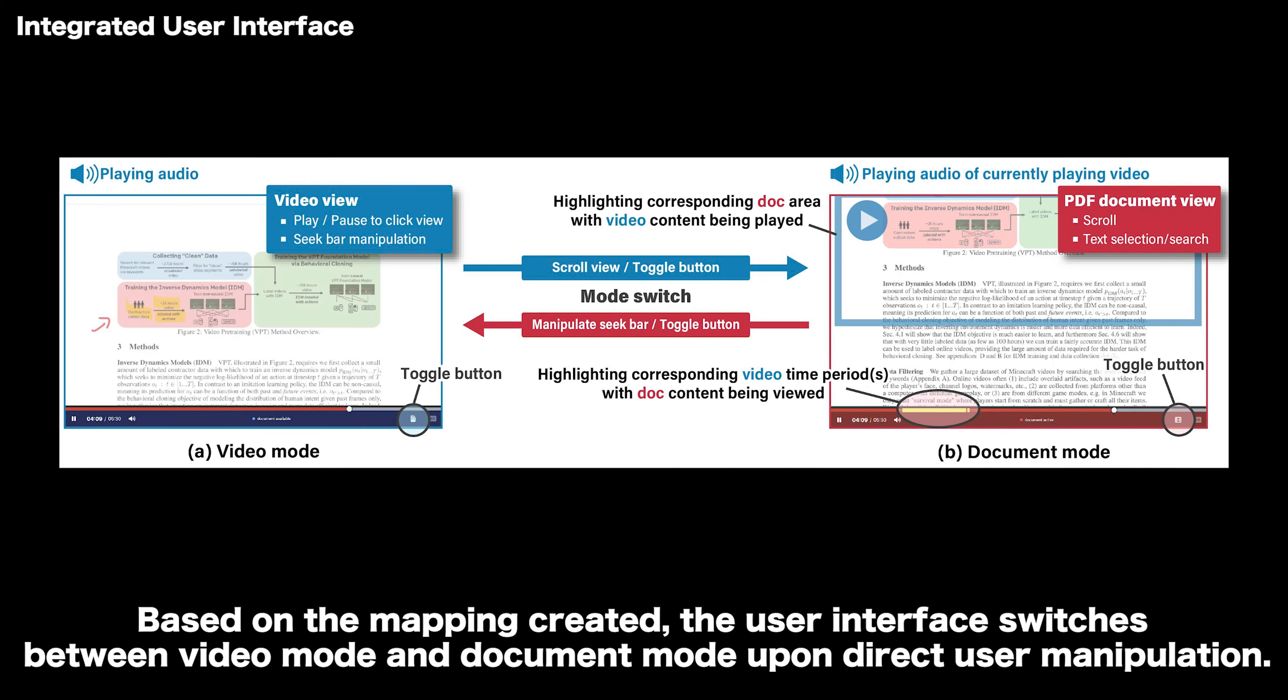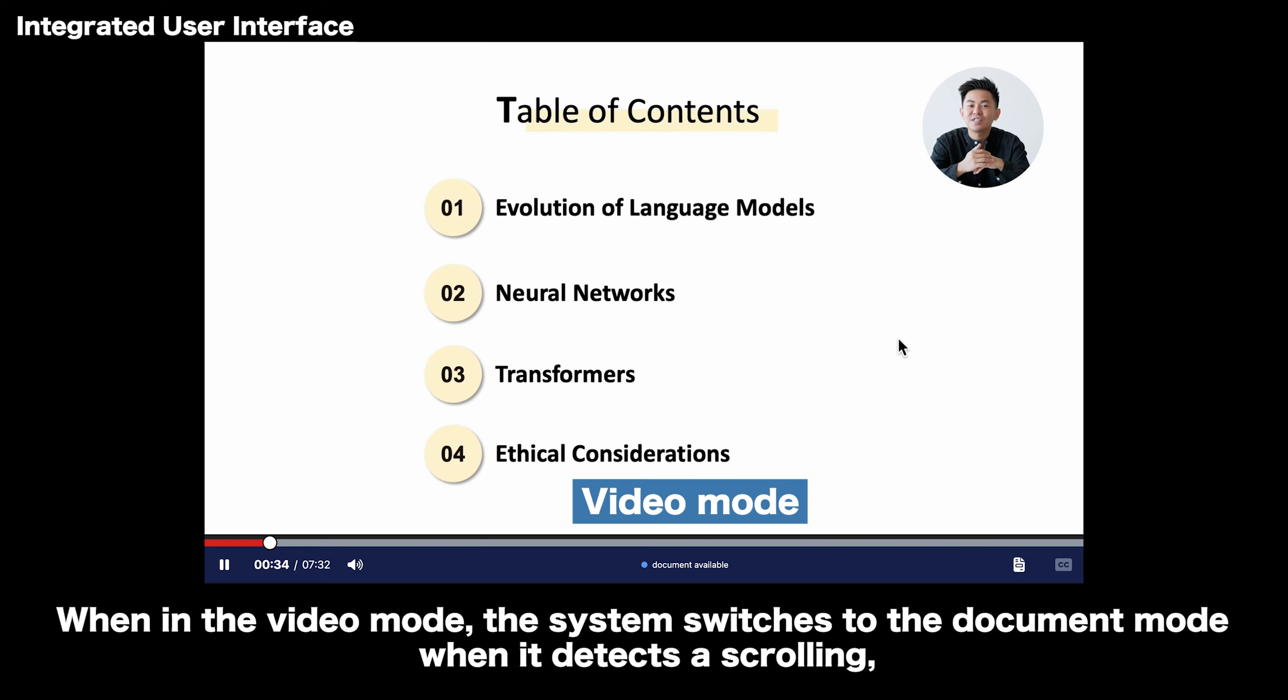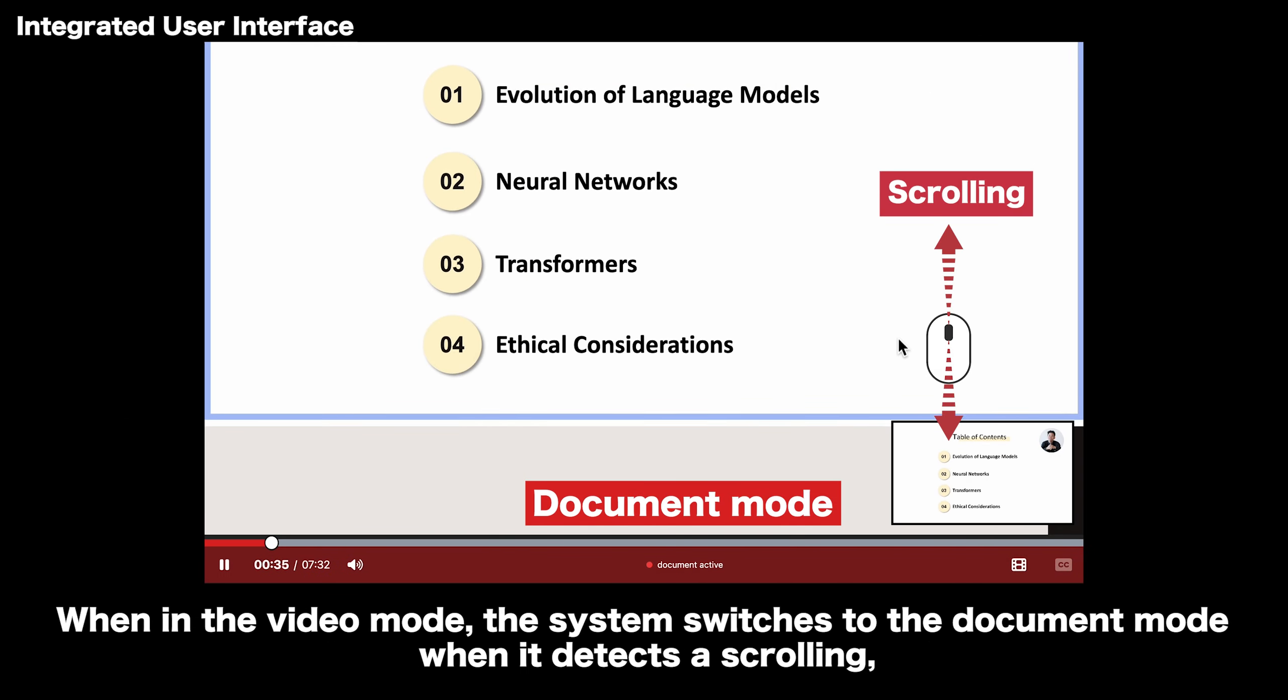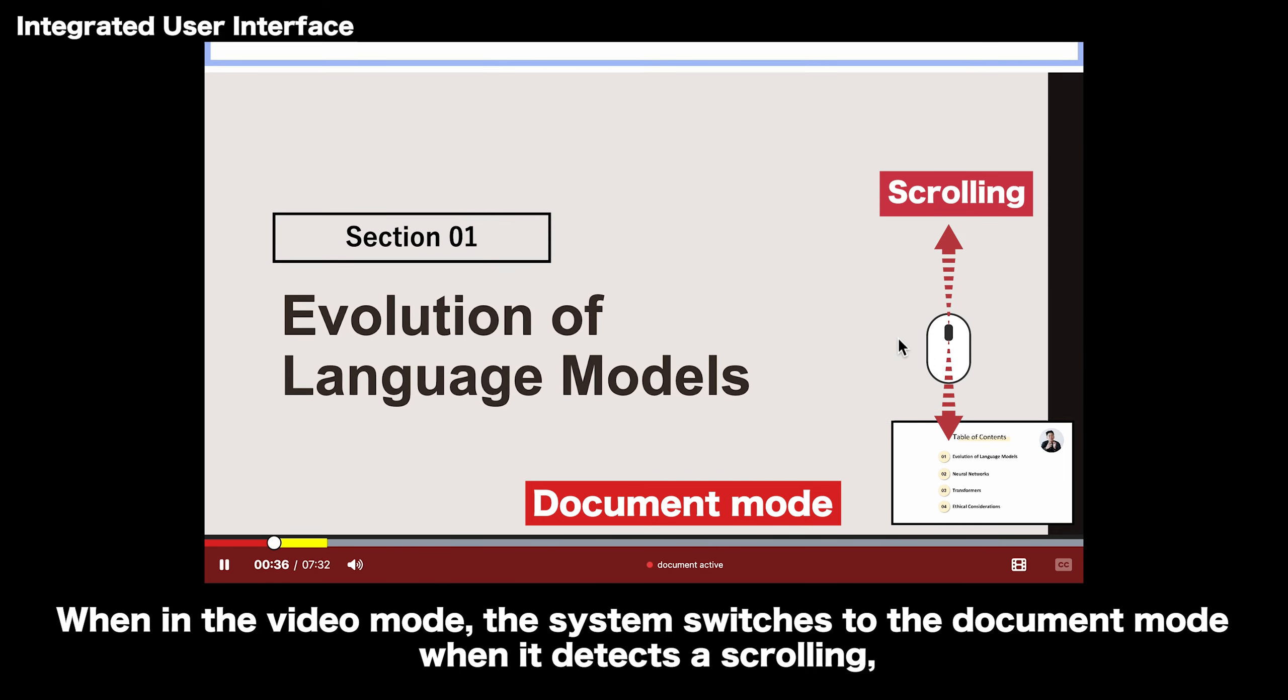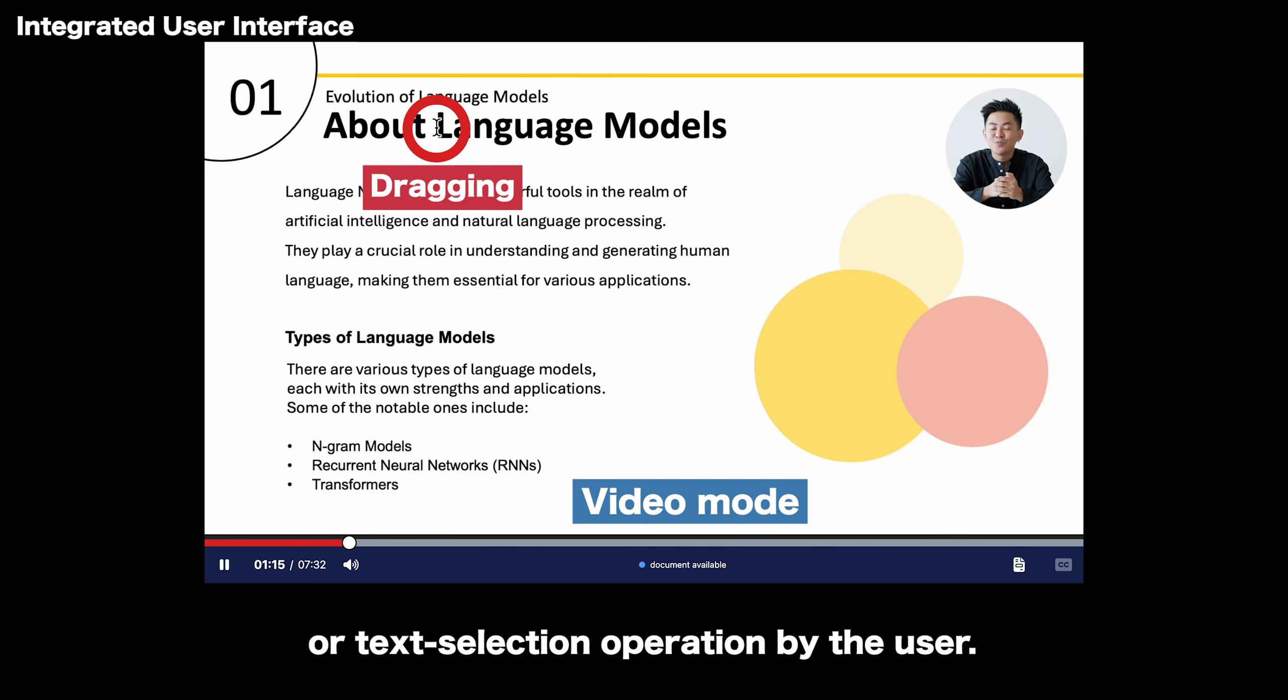Based on the mapping created, the user interface switches between video mode and document mode upon direct user manipulation. When in the video mode, the system switches to the document mode when it detects a scrolling or text selection operation by the user.